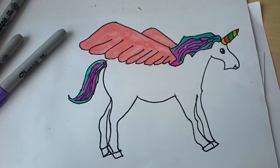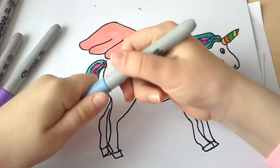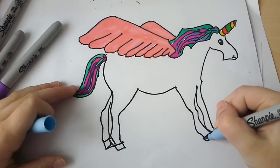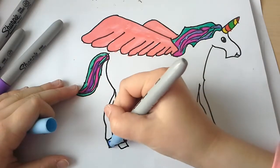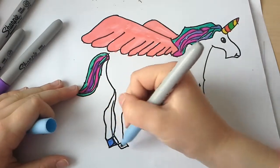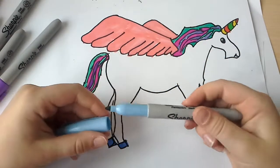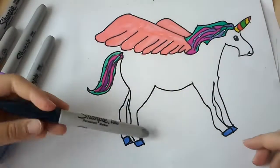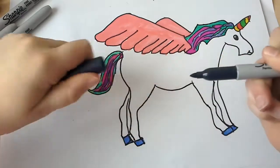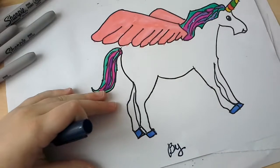And I'm going to color in the hoofs a magical color. Which is going to be light blue. I'm just going to leave the unicorn white. And I'm going to write bye and my name.